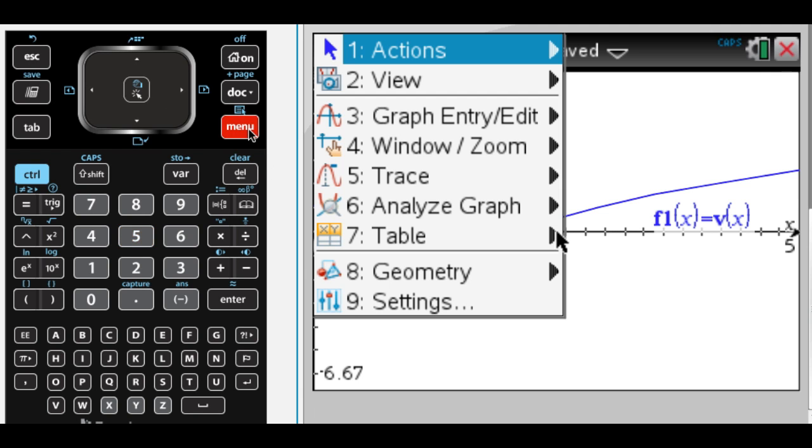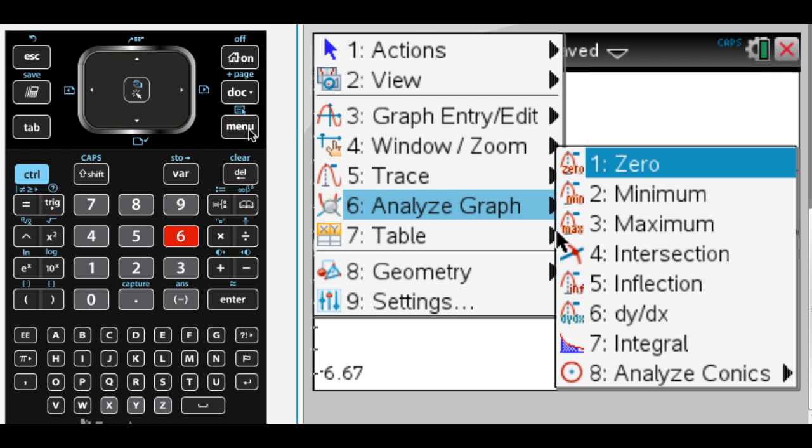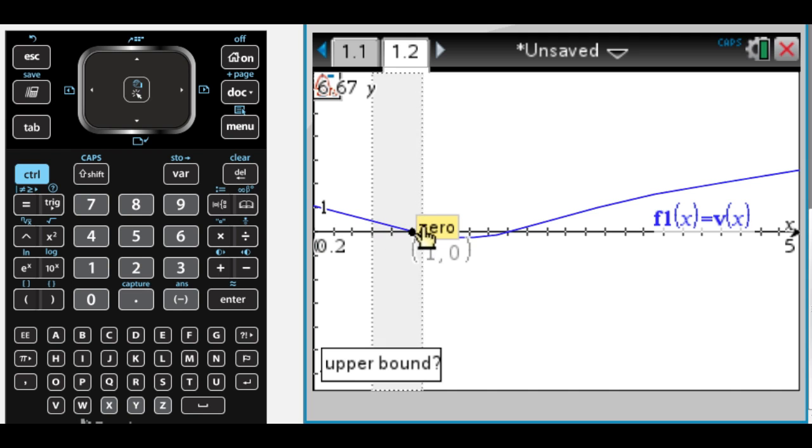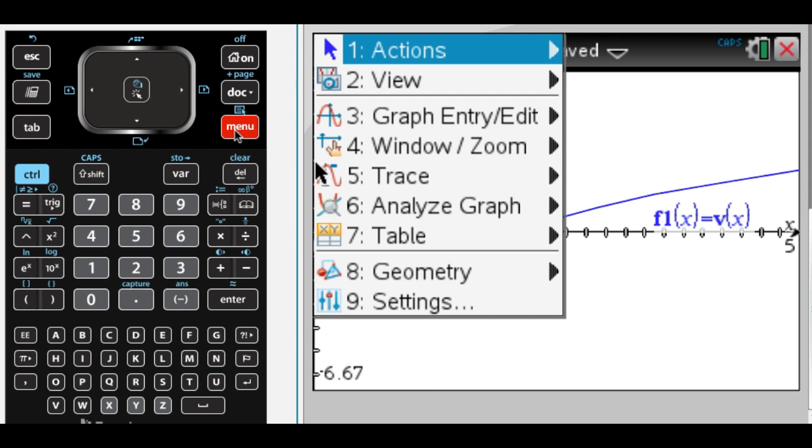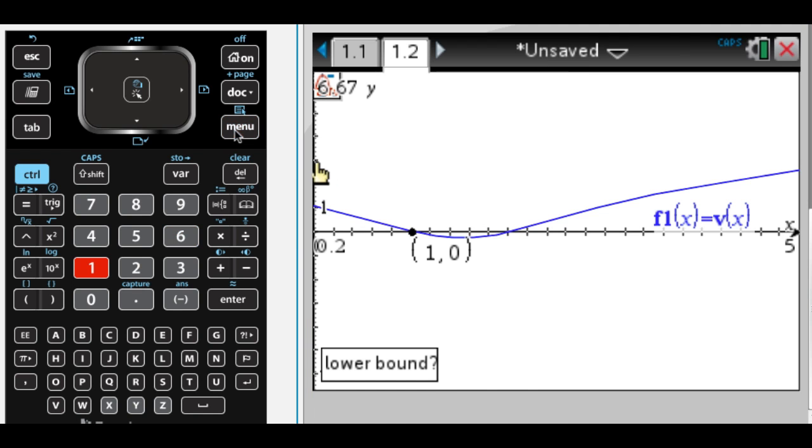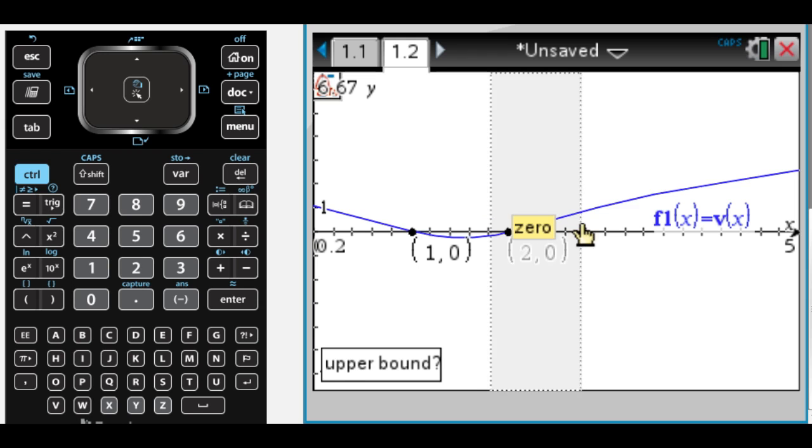And then I need some zeros, so menu 6, 1. There's one zero, and menu 6, 1. I could have done this by hand, but calculator problem, so why bother?